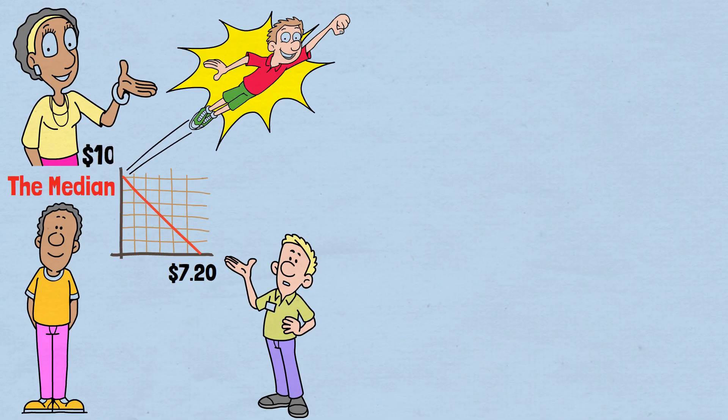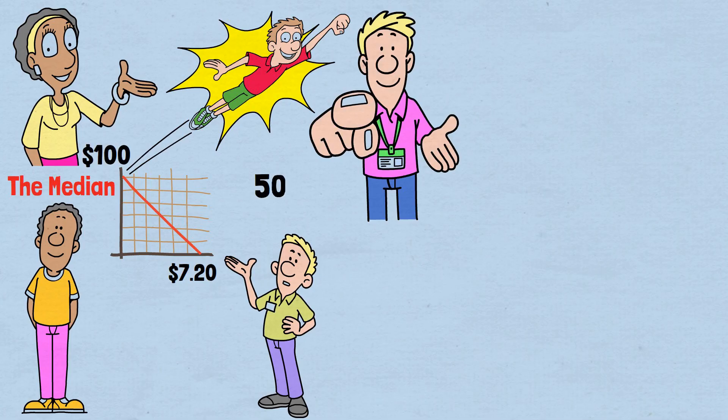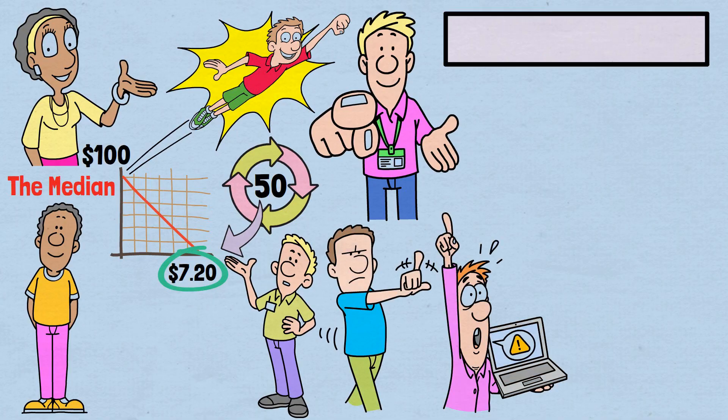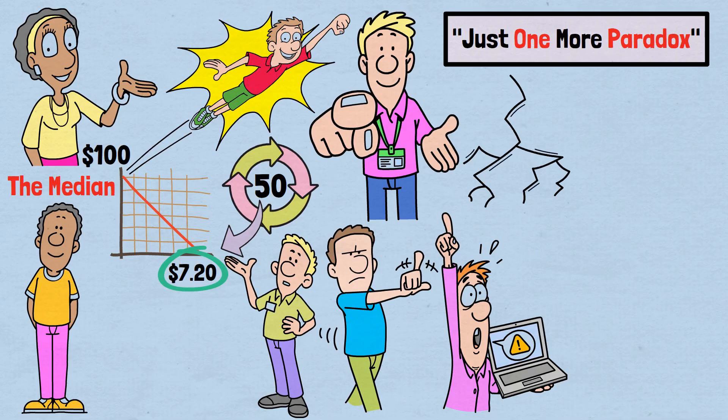Read that again. Start with $100. Play a game where every single flip favors you. And after 50 rounds, the most likely outcome is that you'll end up with about $7. This isn't a mathematical error or a computer glitch. This is the just one more paradox. And it's about to shatter everything you thought you knew about favorable odds.